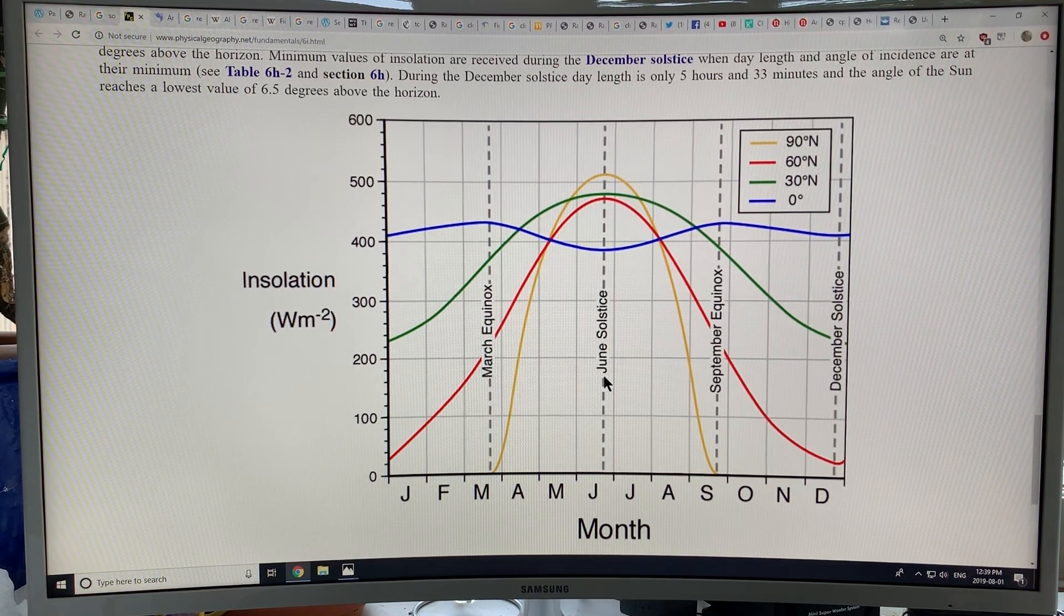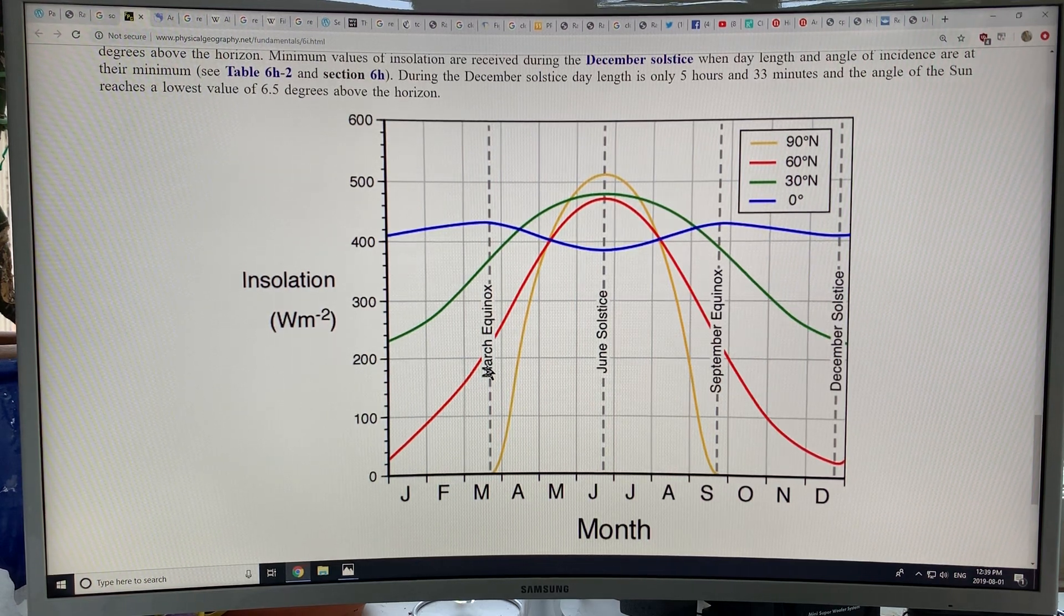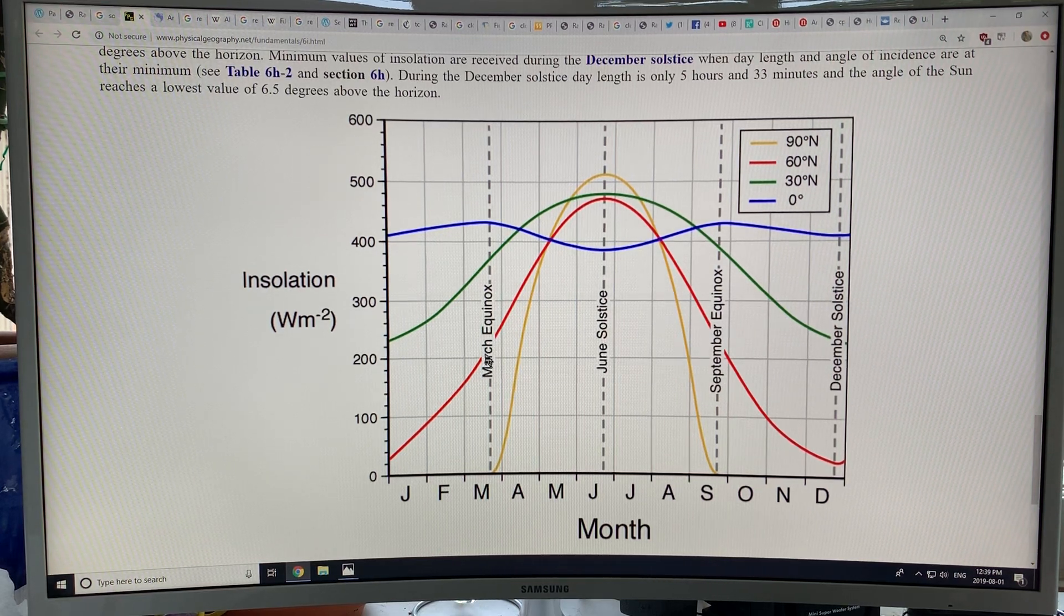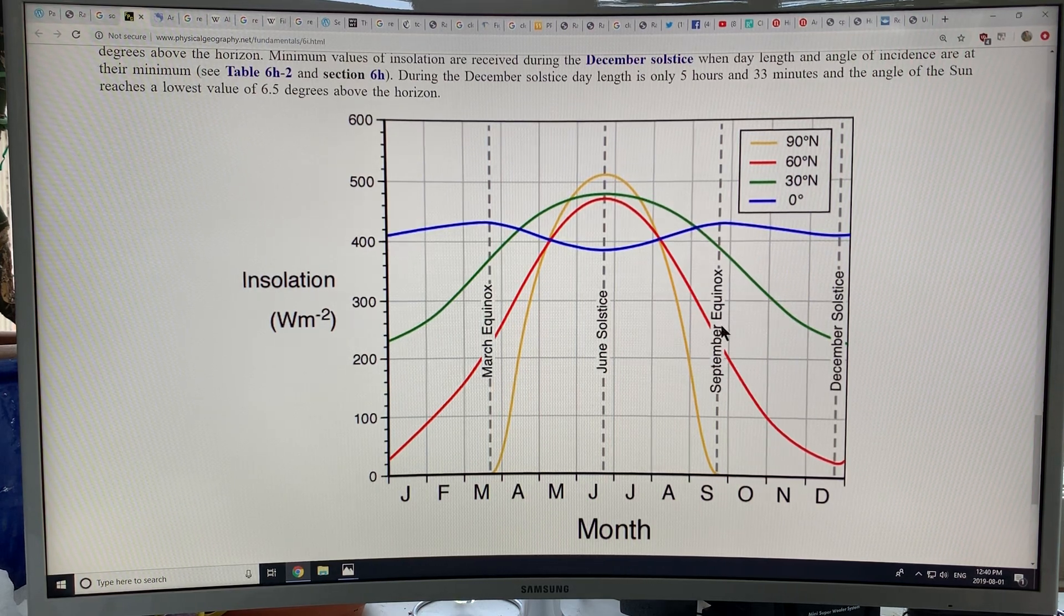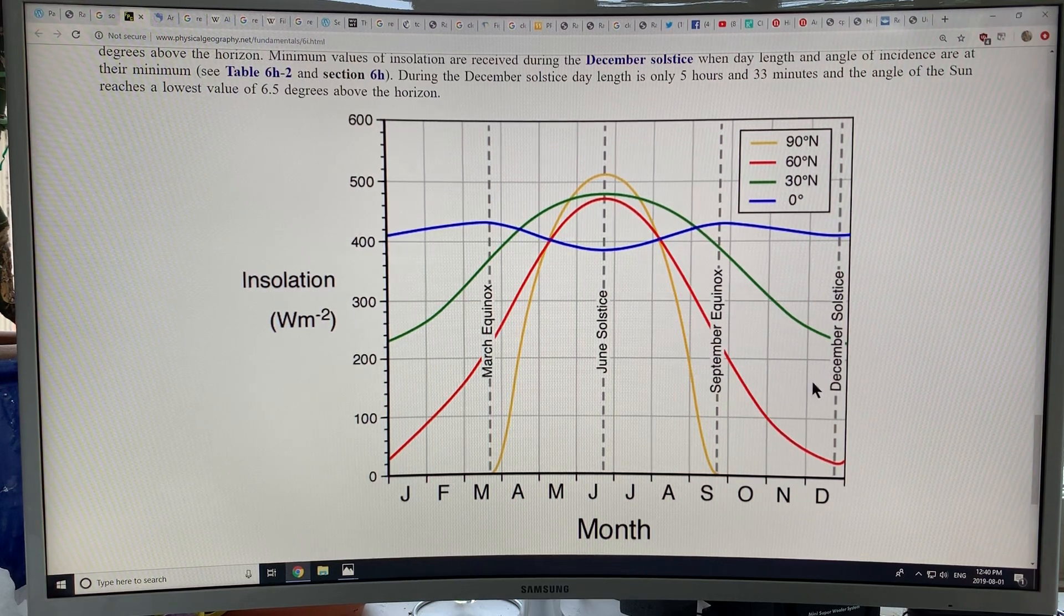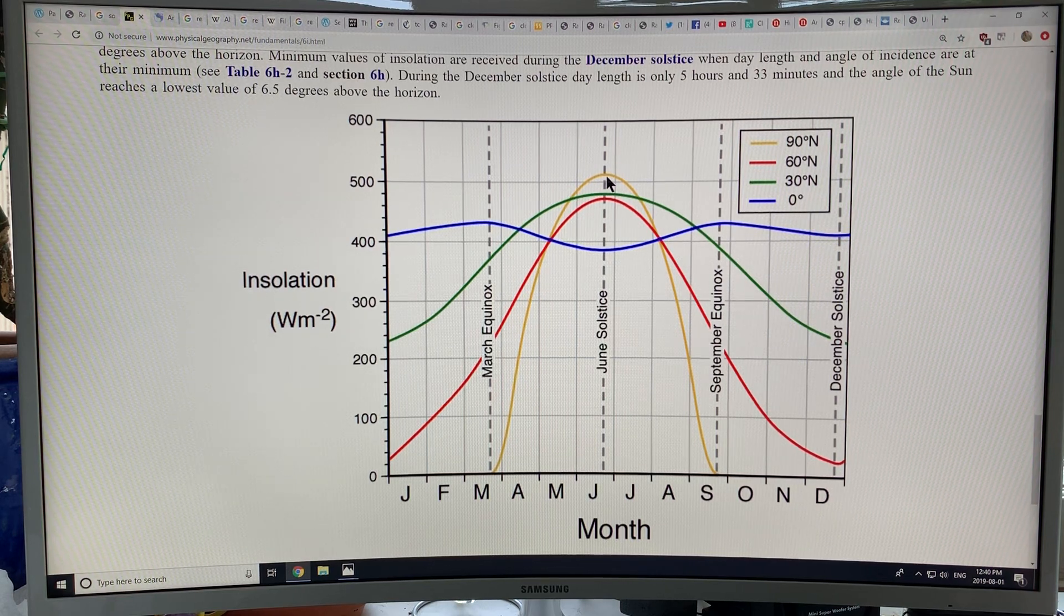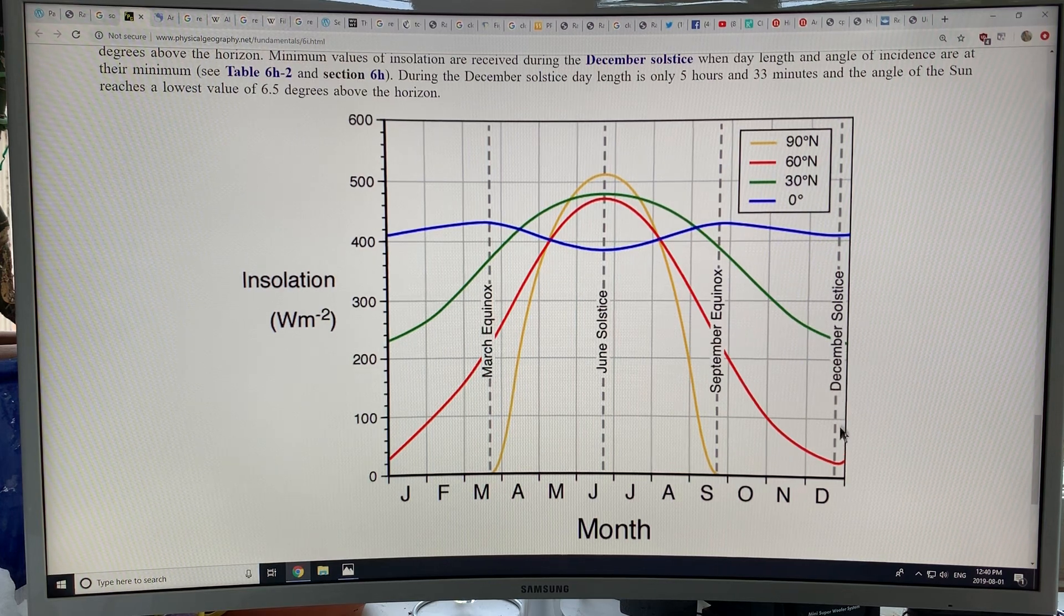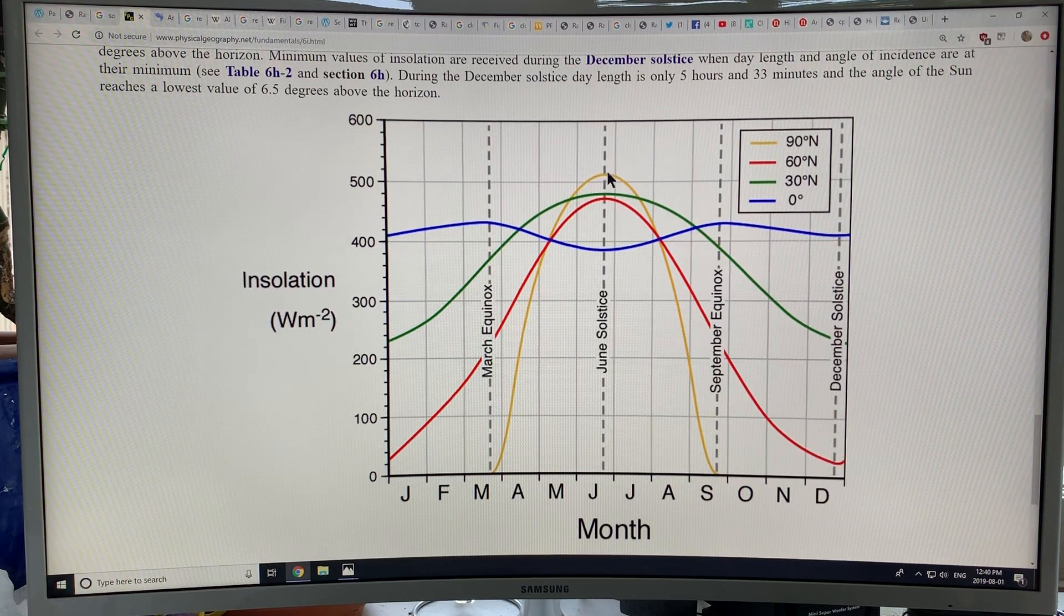So this is a variation, not much variation in insolation at the equator. Now this is the June solstice, June 21st. The equinoxes are when you have 12 hours of night, 12 hours of day at all locations on the earth for the equinoxes. So we have the March 21st, the March equinox, the September equinox, equinox being equal, day and night. And then we have the solstices when the sun is highest in the sky is the June solstice for the northern hemisphere.